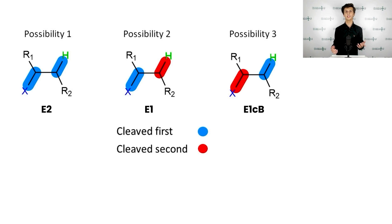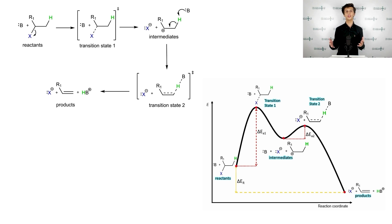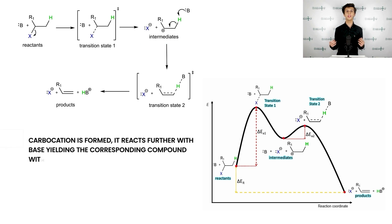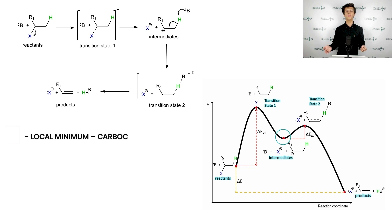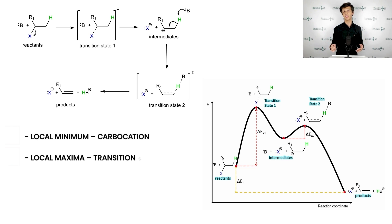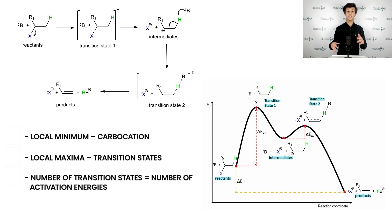Another possibility is to break the CX bond before CH. This process leads to the formation of a carbocation intermediate which reacts further with base, yielding the corresponding compound with pi bond. Such a reaction is called E1, monomolecular elimination. Look at the energy profile of the E1 mechanism. You can clearly see the local minimum represented by carbocation. This intermediate is separated from reactants and products by two local maxima, which are transition states. The number of transition states defines the number of different activation energies — obviously there are two, differing in magnitude.